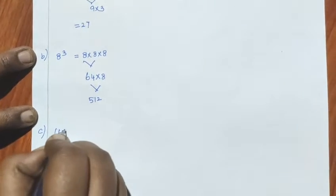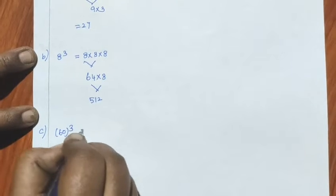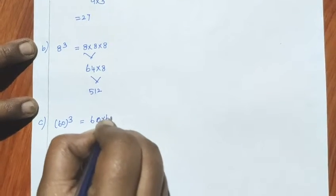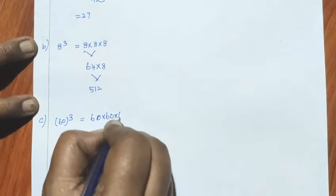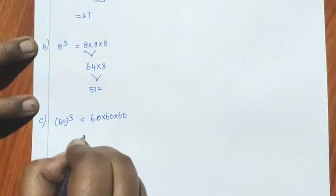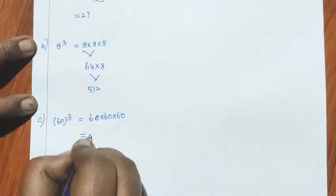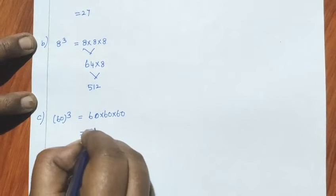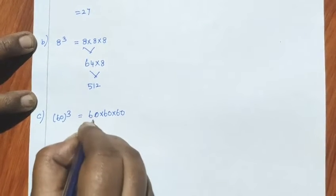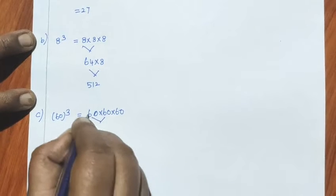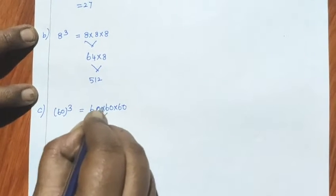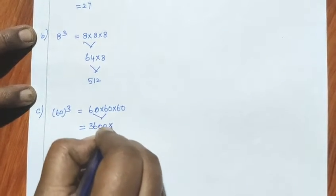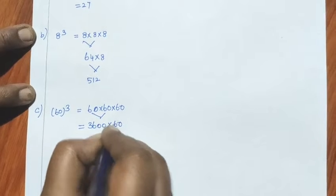Next, C sum: 60 the whole cube. So 60 into 60 into 60. How do you multiply? First multiply the whole number: 6 sixes are 36. Then handle the zeros — 36 into 60.